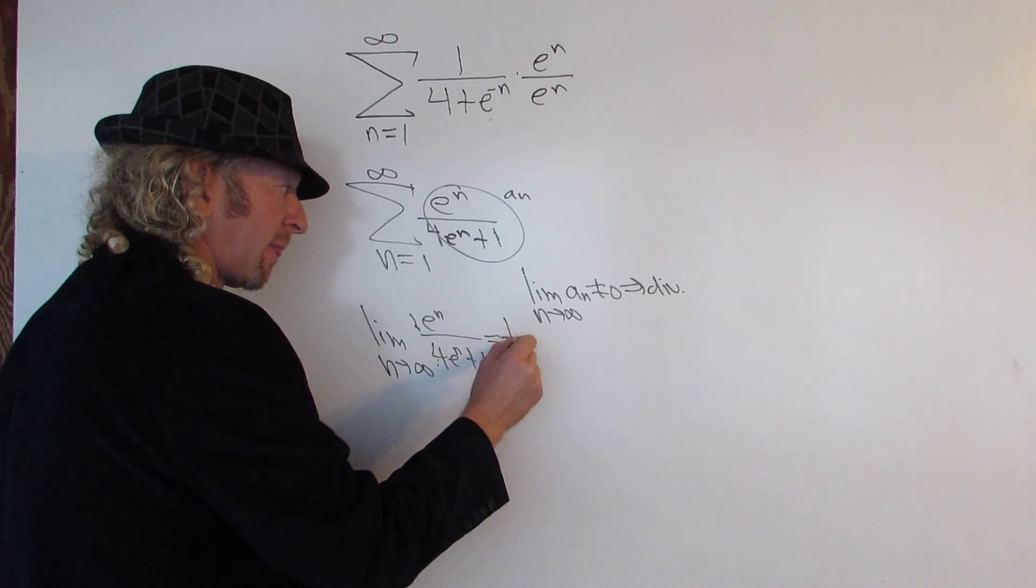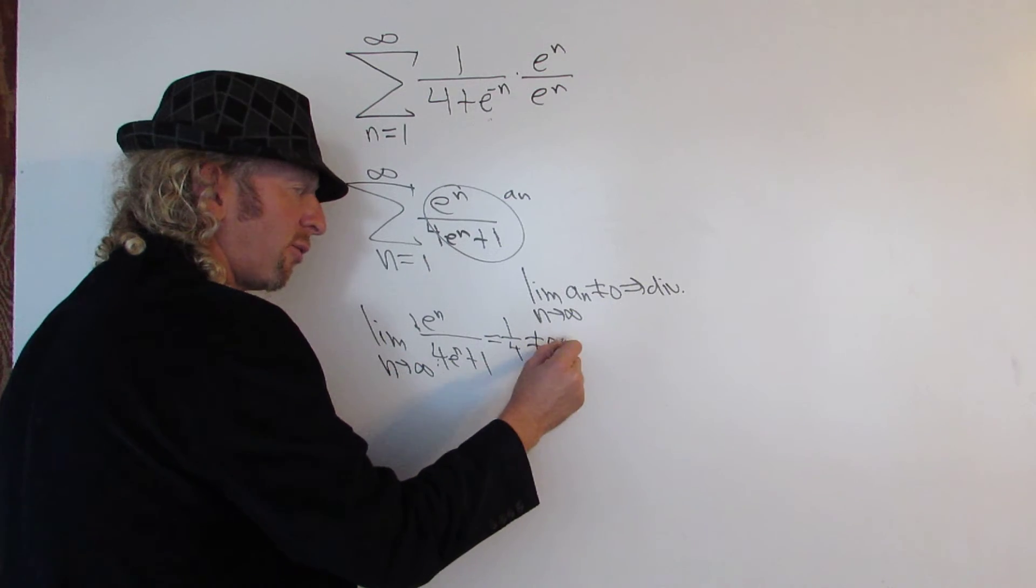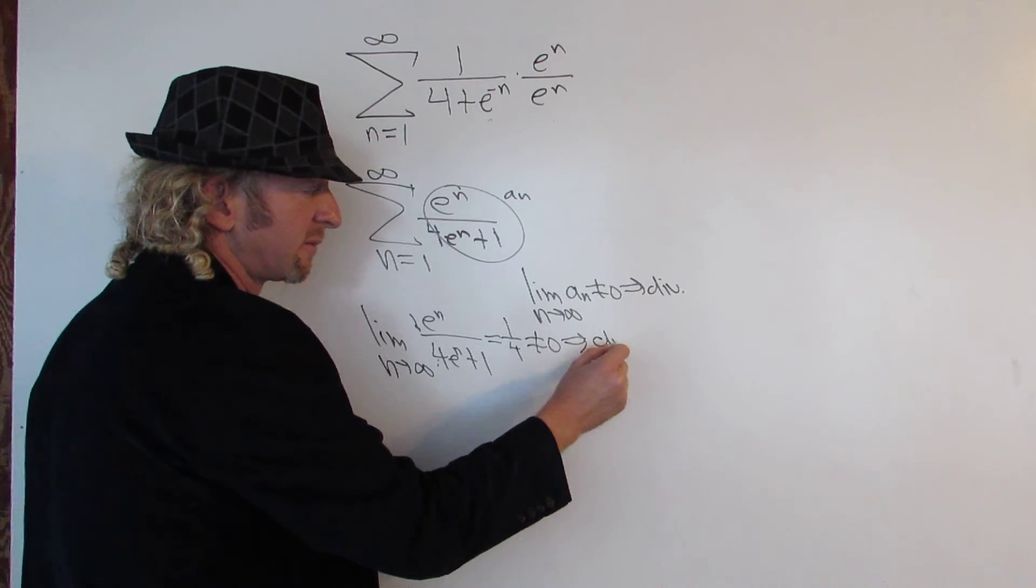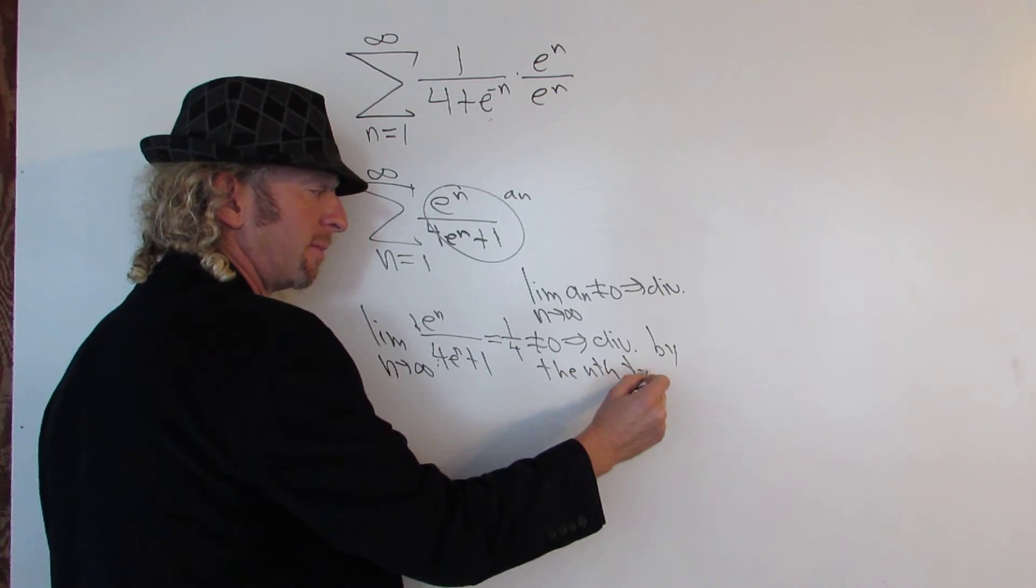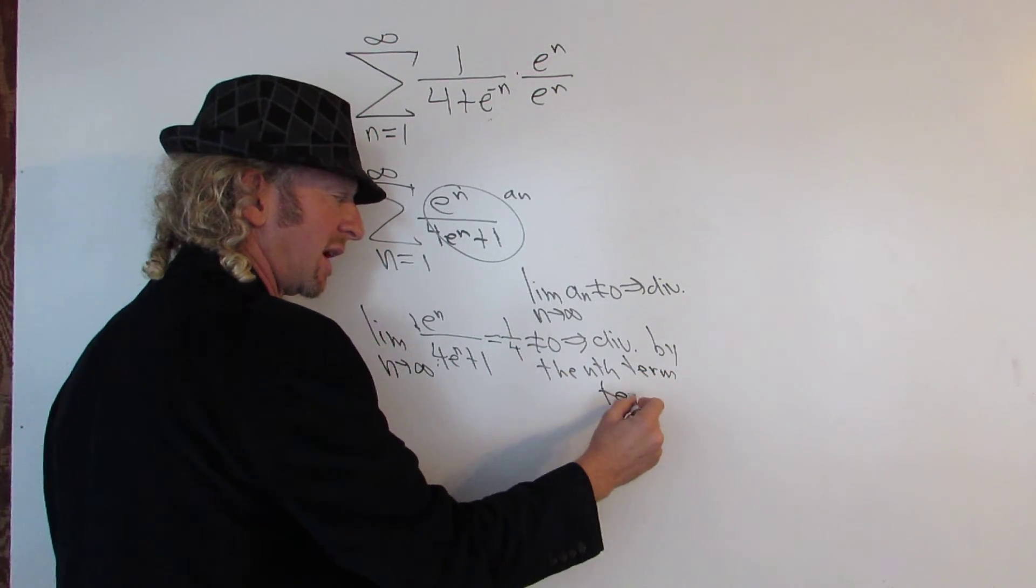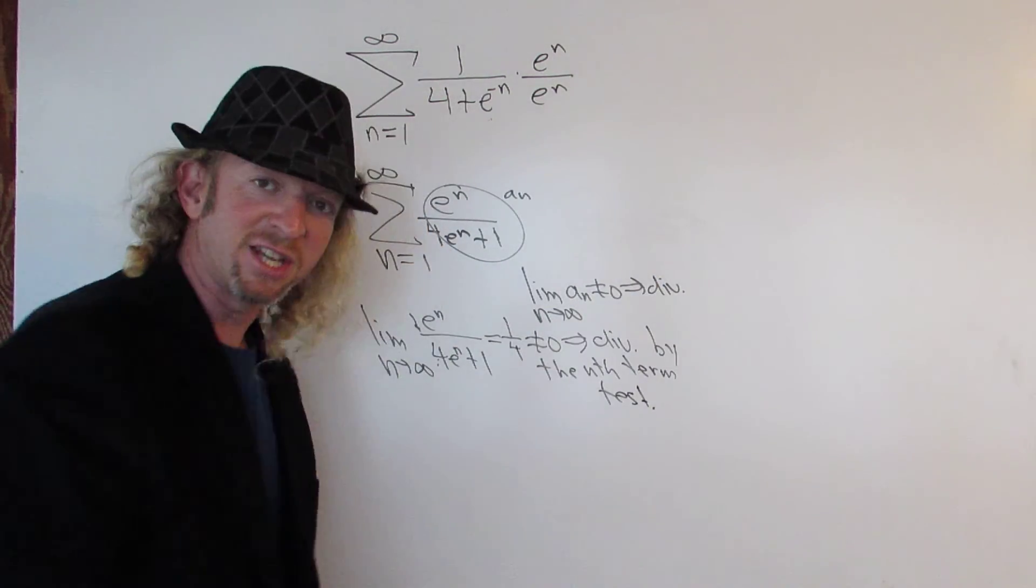1 over 4. That's not equal to 0. Therefore, the series diverges by the nth term test. That's it. Thanks for visiting my channel.